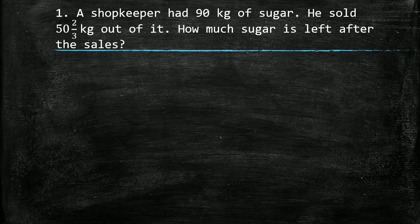In this question, the shopkeeper was having 90 kg of sugar. He sold 50 whole 2 upon 3 kg of sugar out of 90 kg. We have to find out how much quantity is left after the sales. To find the left quantity, we have to subtract the quantity sold, that is 50 whole 2 upon 3 kg, from the total quantity of sugar that is 90 kg.